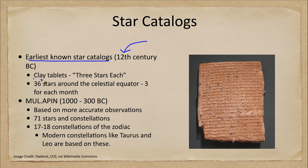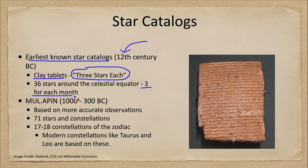These were recorded on clay tablets in what is called 'Three Stars Each.' What does that mean? There were three stars for each month, and the stars that were catalogued were along the celestial equator, giving us a total of 36 stars located in that direction on the sky.